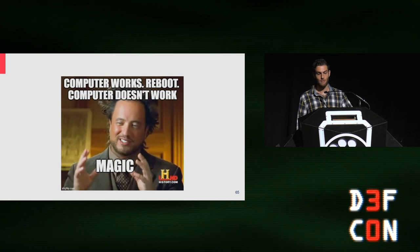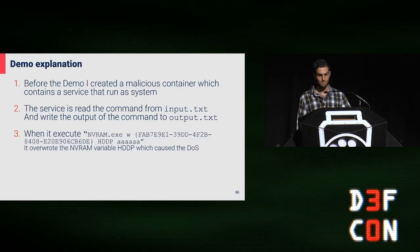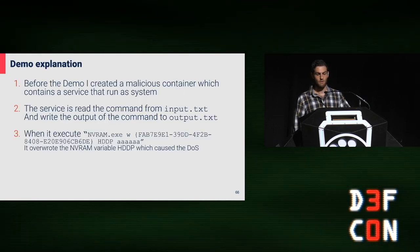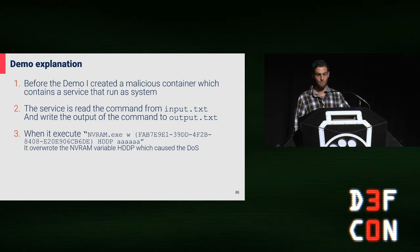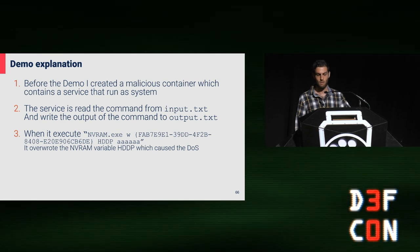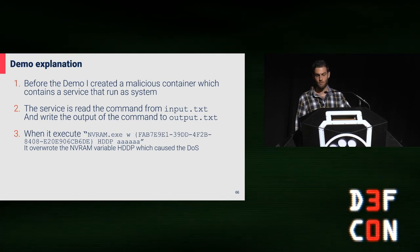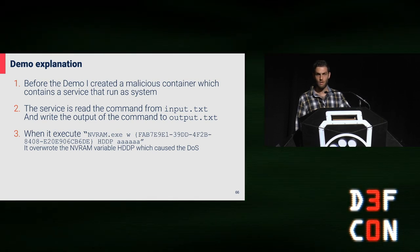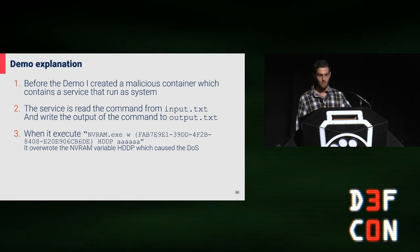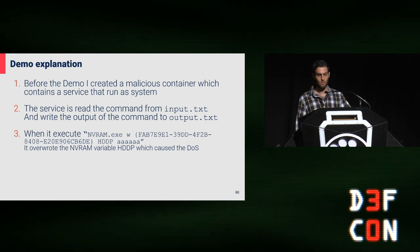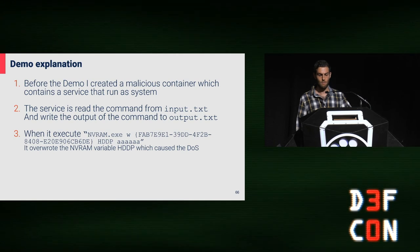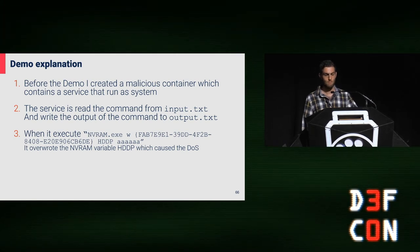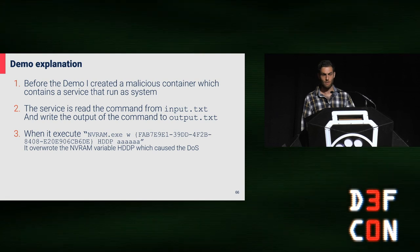Let's explain how the demo worked. Before the demo, I created a malicious Windows container containing a backdoor service that runs as system. It reads and writes from an input file and output file. When we executed using this service the NVRAM executable — which overwrites the HDDP variable and restarted the machine — it triggered the permanent denial of service.